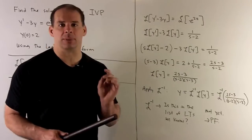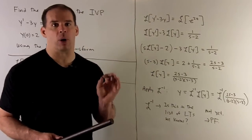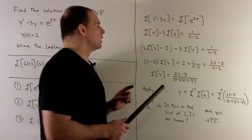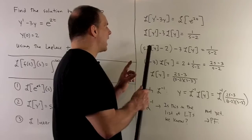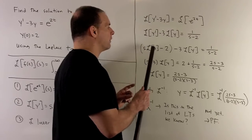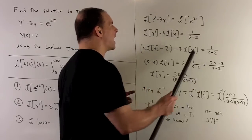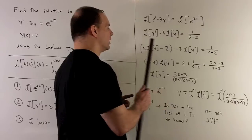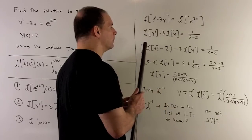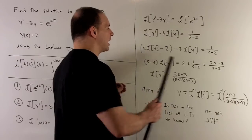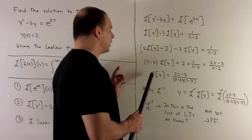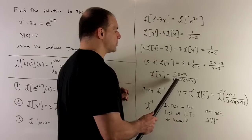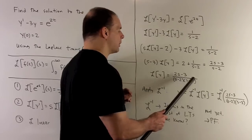Then we want to isolate the Laplace transform of y — that's just algebra. We push all the non-Laplace-transform-of-y terms to the right side, keeping the Laplace transform of y terms on the left. When we collect everything, the result is 2s minus 3, over the product of s minus 2 and s minus 3.